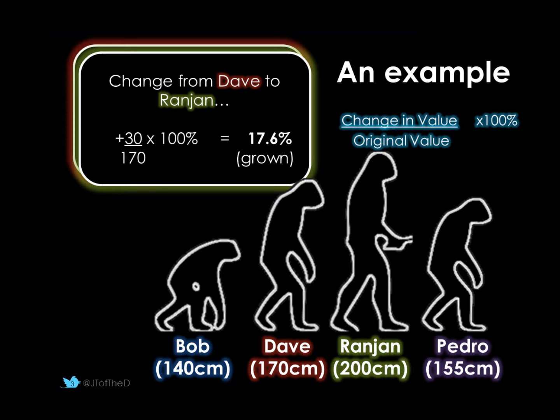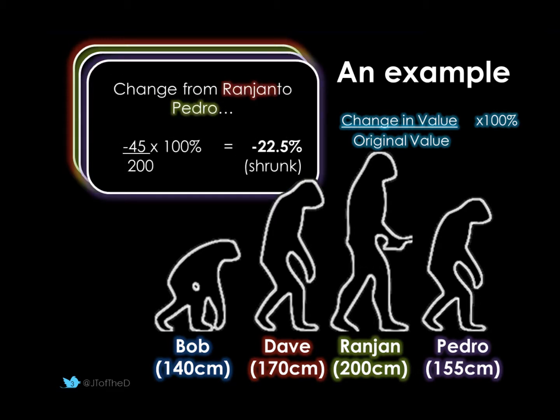And finally, Ranjan in his old age changed his name to Pedro, and we've got a change. This time the change in value is minus 45 — from Ranjan at 2 m (200 cm) to Pedro at 155 cm, that's minus 45 cm. Divided by the original 200, times 100, and we get negative 22.5%. That negative tells us we've actually shrunk. So it's important to bear in mind whether it's a negative or positive value we're dealing with.